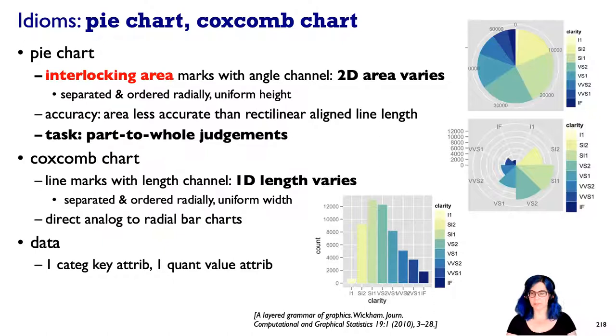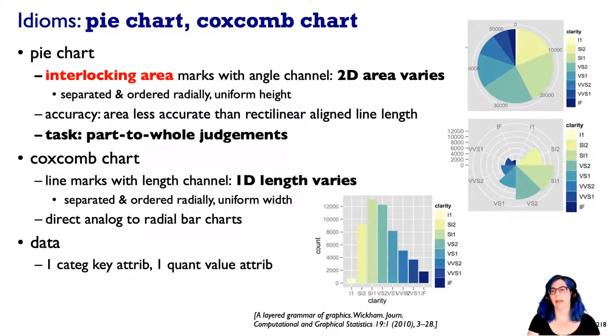And that brings us to the pie chart, a much debated radial layout. From a structural point of view, let's understand what's a pie chart. Instead of something where we've got these line marks, we've got area marks. We're actually directly changing the angle of the pie chart wedges, which means that what's getting encoded are these areas. So the two-dimensional area varies of these wedge-shaped regions. We're still separating into regions and we're ordering them and their height is uniform. It goes all the way out to the outside of the bar chart. So we're definitely less able to perceive area than we are able to perceive rectilinear aligned length.